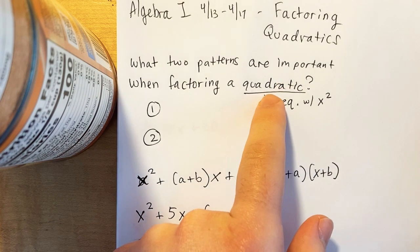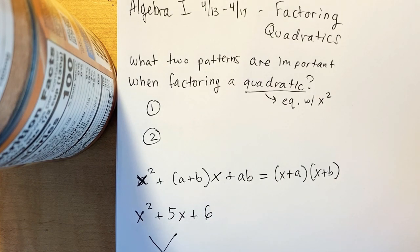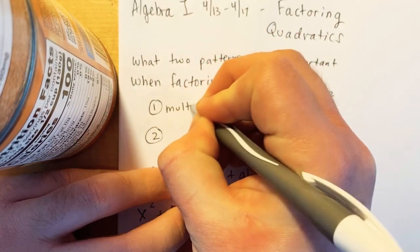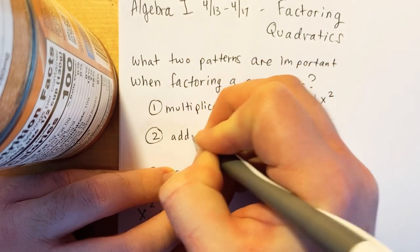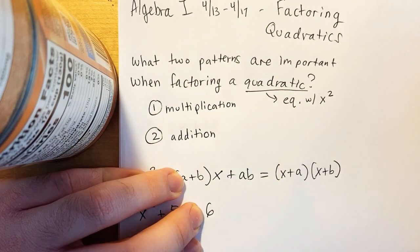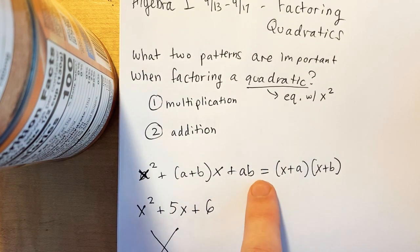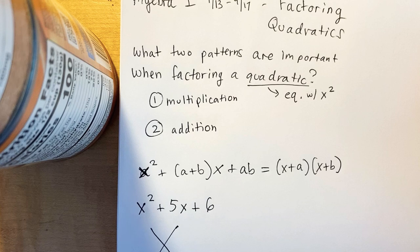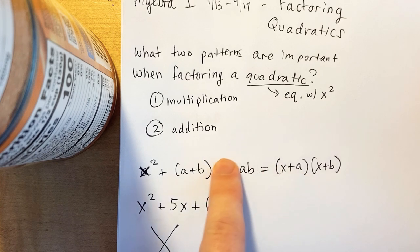Quadratics is just a word that means it's an equation with x squared. The two patterns that are most important when factoring a quadratic are multiplication and addition. You have that a and b are whole numbers, and you can get to this form: x plus a number, times x plus a number.